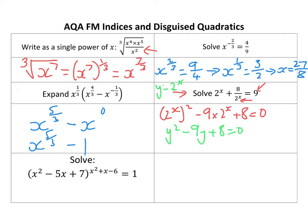Plus 8 equals 0. That will factorise: y minus 1, y minus 8 equals 0. And that will give me the solutions. So if I swap 2 to the x for y, that gives me 2 to the x equals 1 and 2 to the x equals 8. From the first one I get x equals 0, because 2 to the power 0 is 1. And from the second one I get x equals 3. Whilst it looks a bit nasty, it shouldn't be too bad.